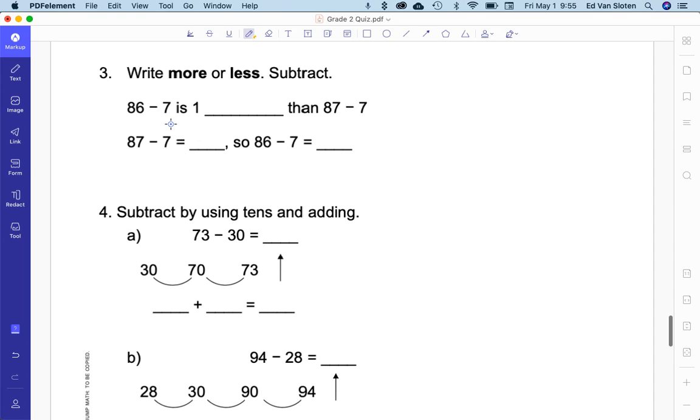86 minus 7. 87. So, we're looking at these two. This is one less. So, 87 minus 7 is 80. 86 minus 7 is 79. And we did look at that a couple weeks ago.